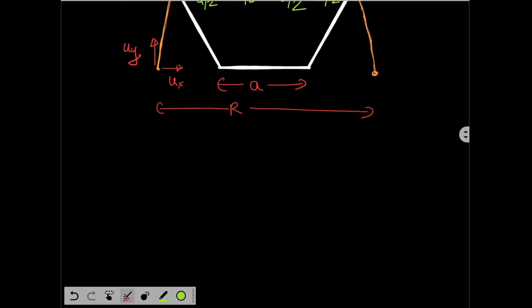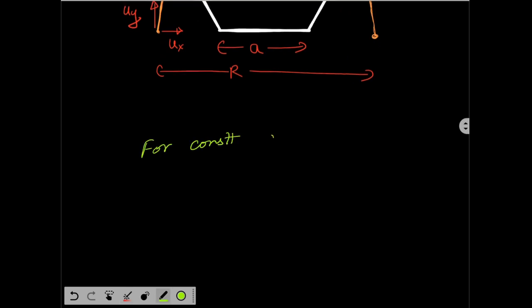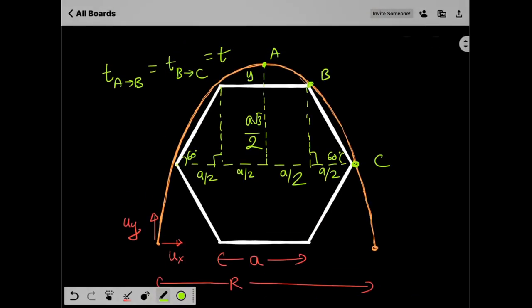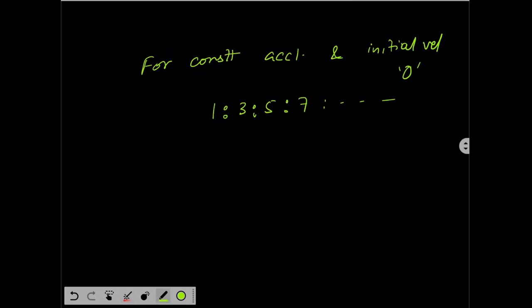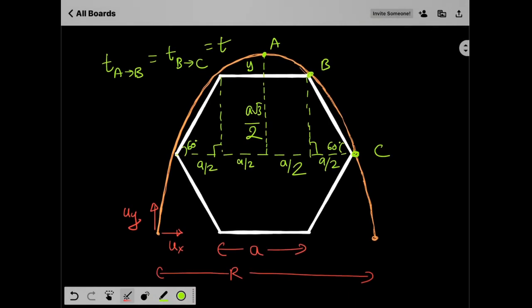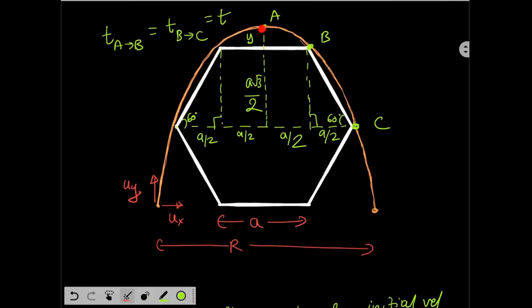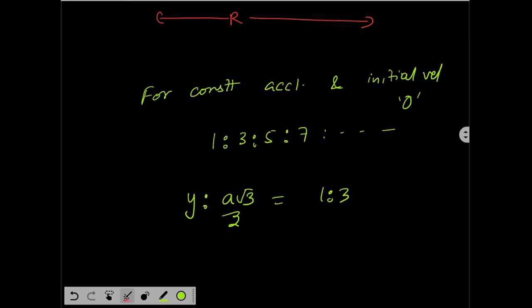For motion along the y-axis with constant acceleration and initial velocity zero, distances covered in equal time intervals are in the ratio 1:3:5:7 and so on. From A to B the particle covers vertical height y, and from B to C it covers a√3/2. Both are covered in equal time t. At point A the velocity along the y-axis is zero, so the ratio y to a√3/2 equals 1:3.